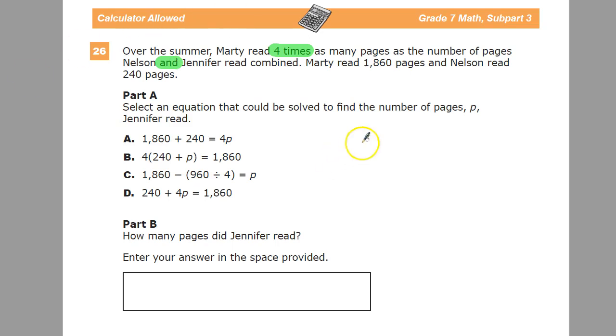So I'm going to go over here and write Marty. We'll assume Marty here means how many pages he's read, is four times the amount that Nelson read plus Jennifer. So as long as you understood that the four times the two things meant parentheses, you're almost there.